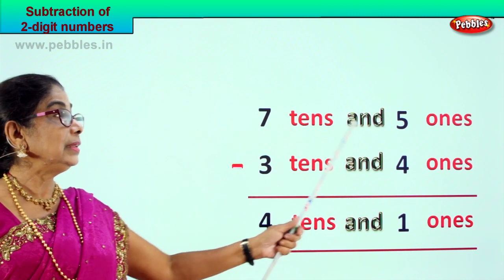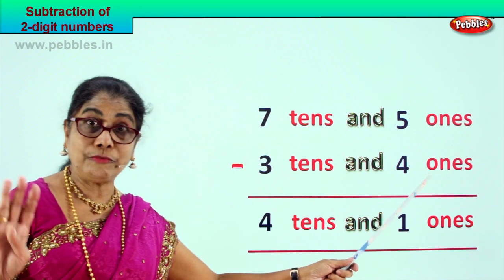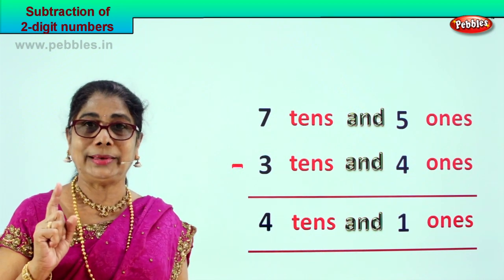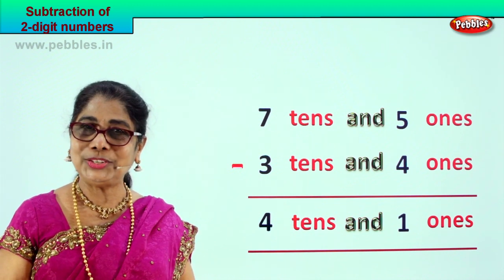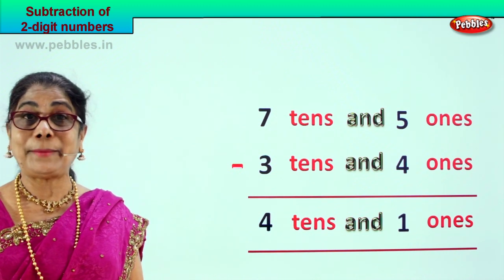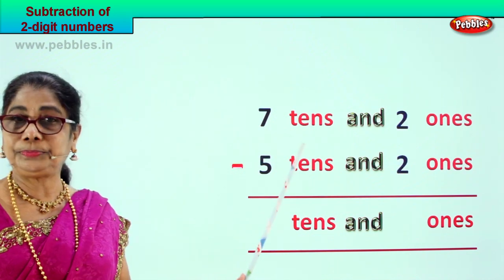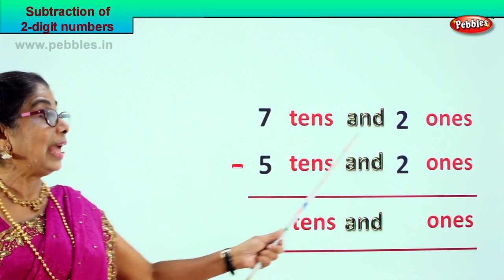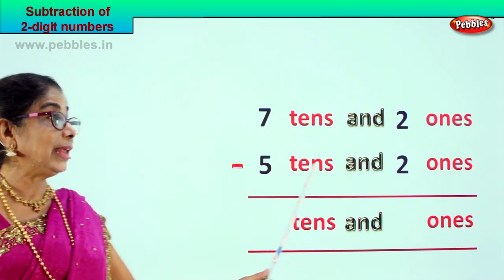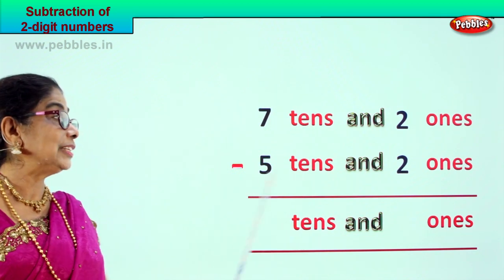7 tens and 5 ones minus 3 tens and 4 ones — your answer is 4 tens and 1 ones. Did you enjoy? Let's take another sum. Look what you have here: 7 tens and 2 ones. 72 minus 52.